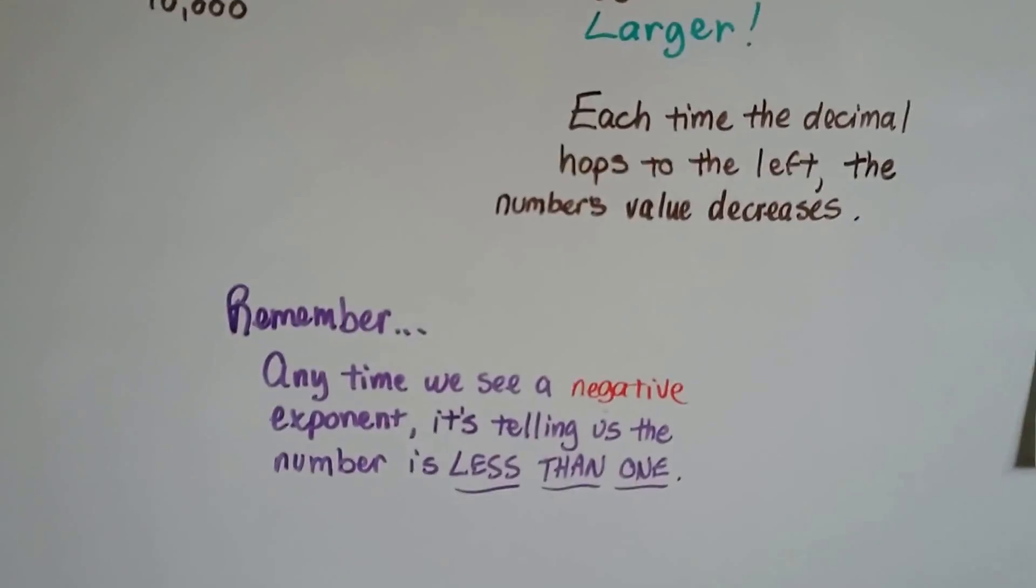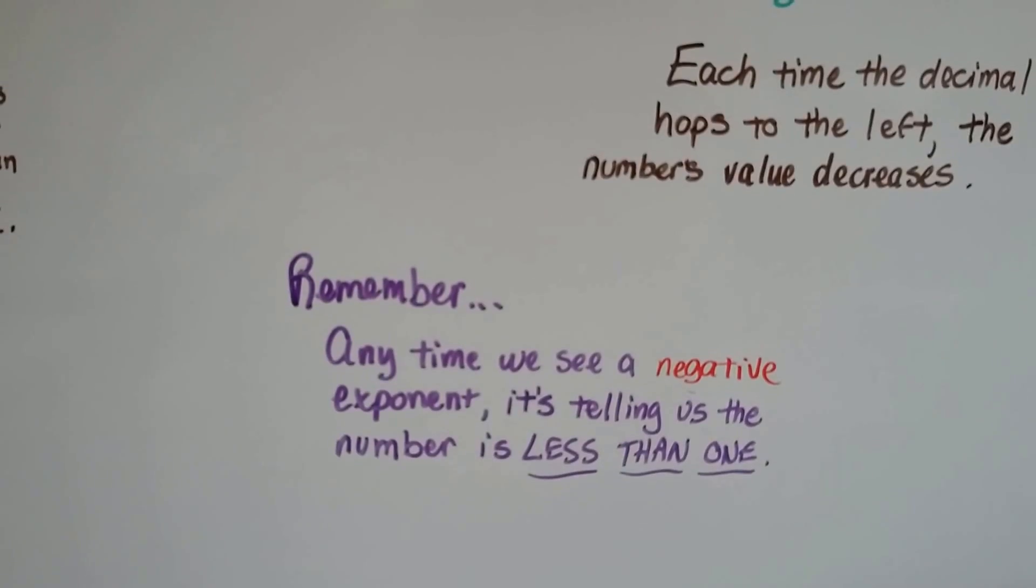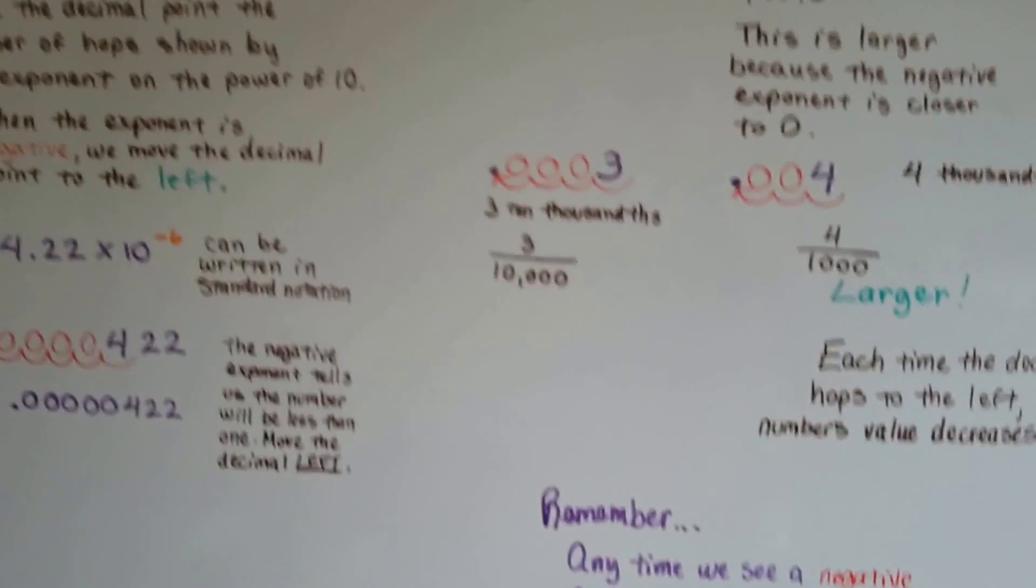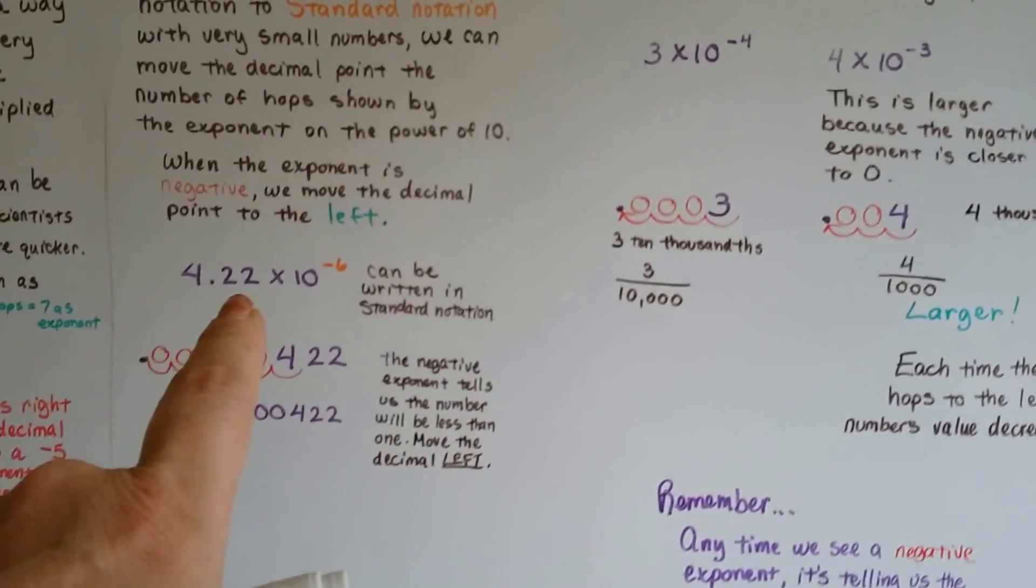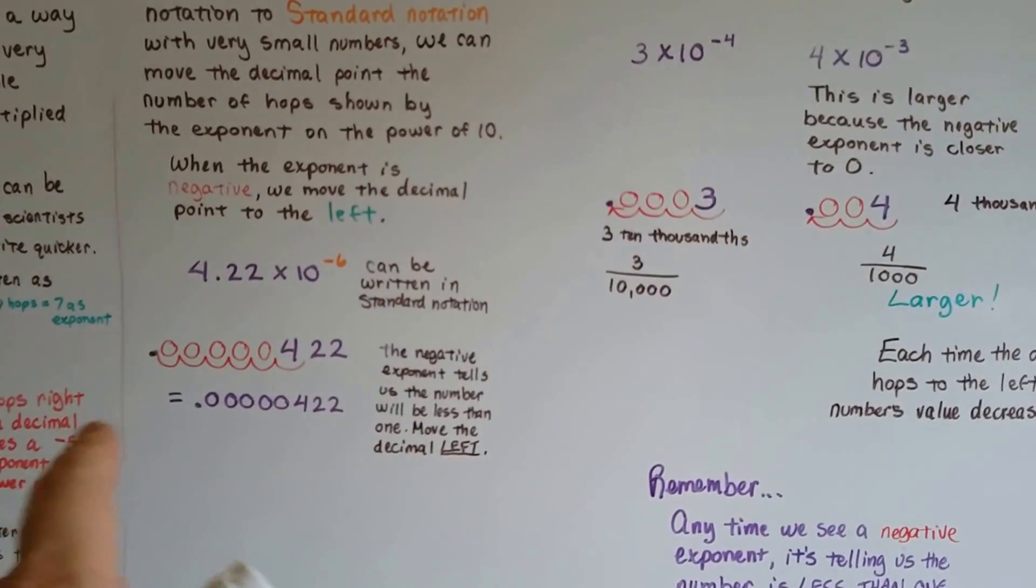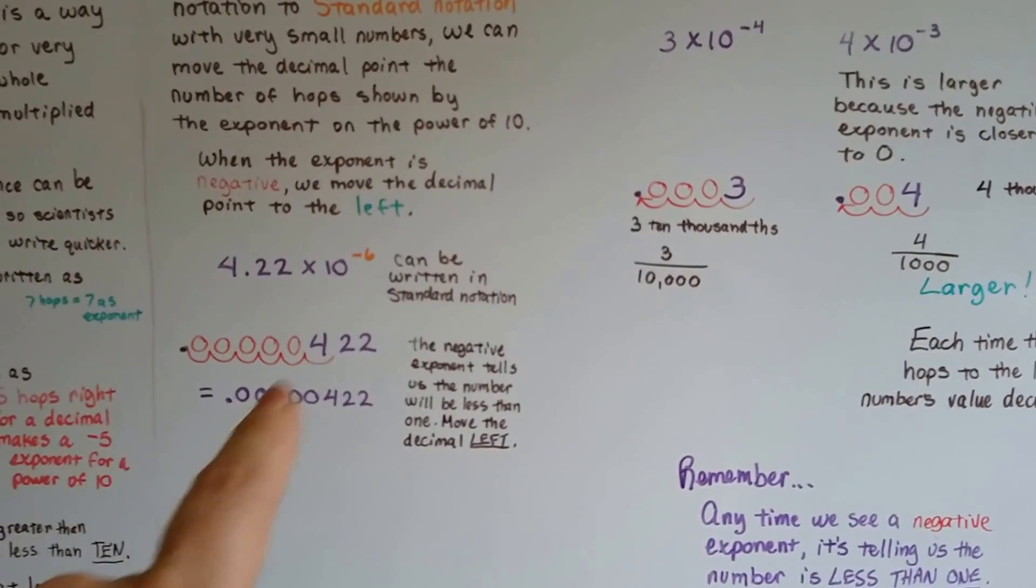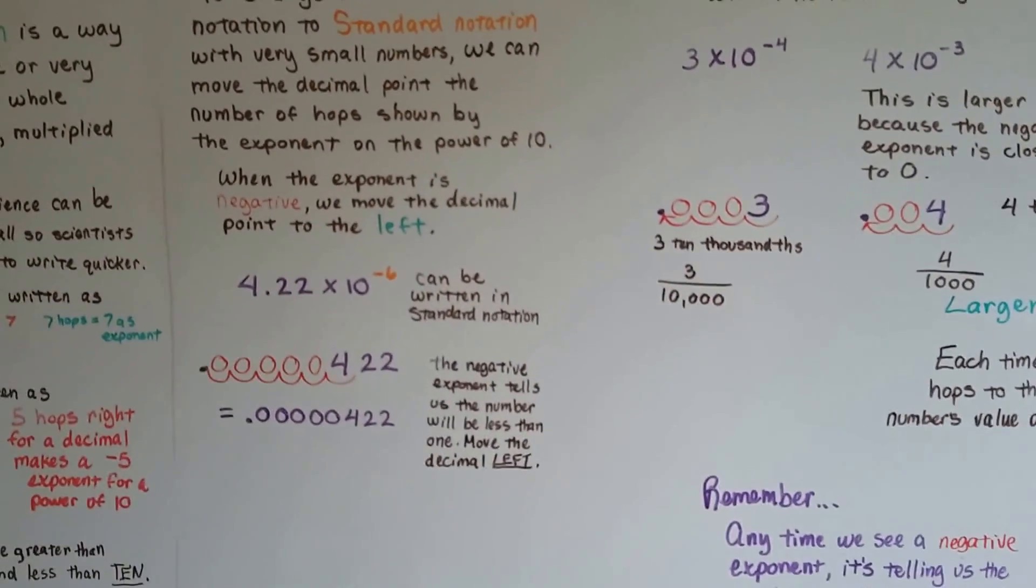So remember, any time we see a negative exponent, it's telling us the number is less than 1. If you want to just change these to standard notation, when you see the negative 6 or the negative 7 or the negative 3, whatever it is, start counting your hops towards the left and put in your zeros for placeholders.